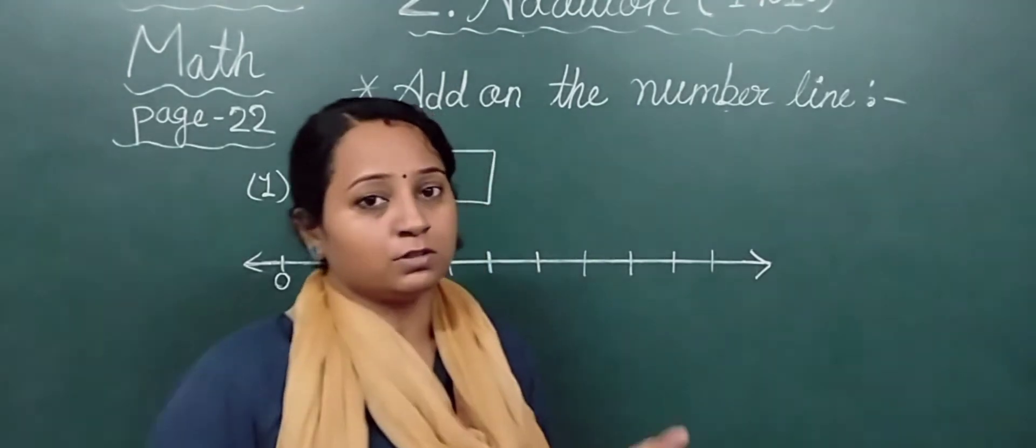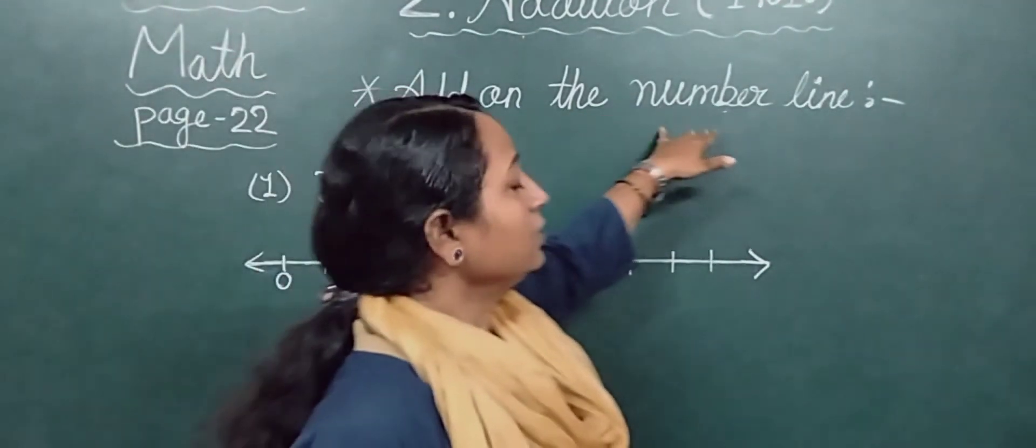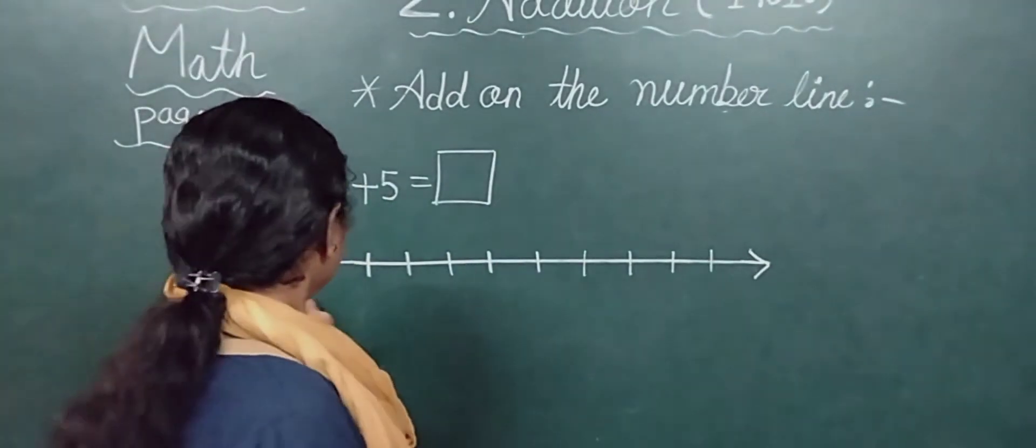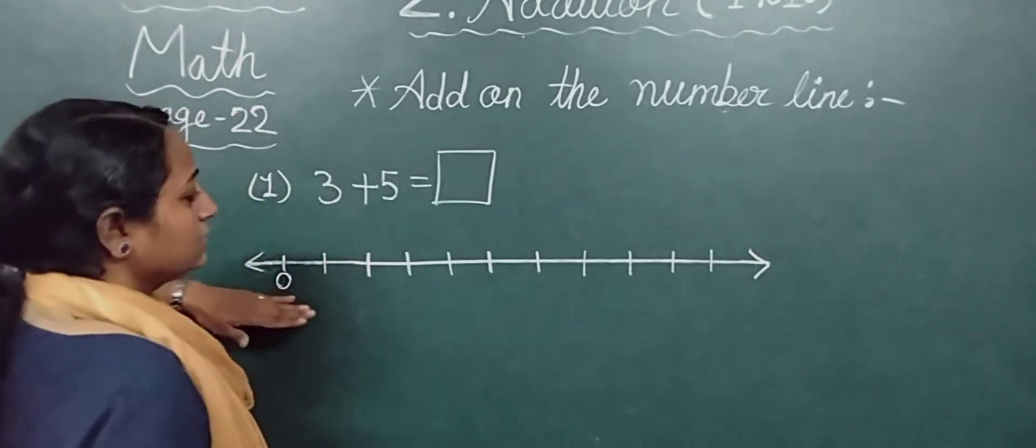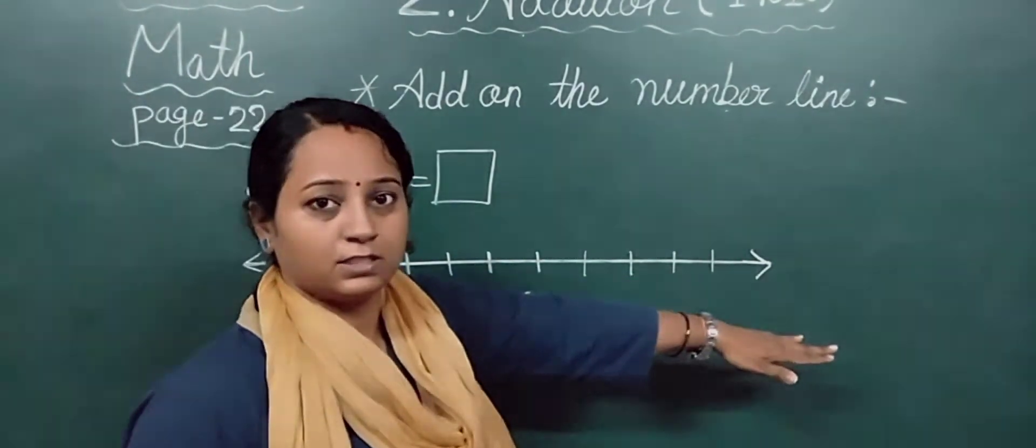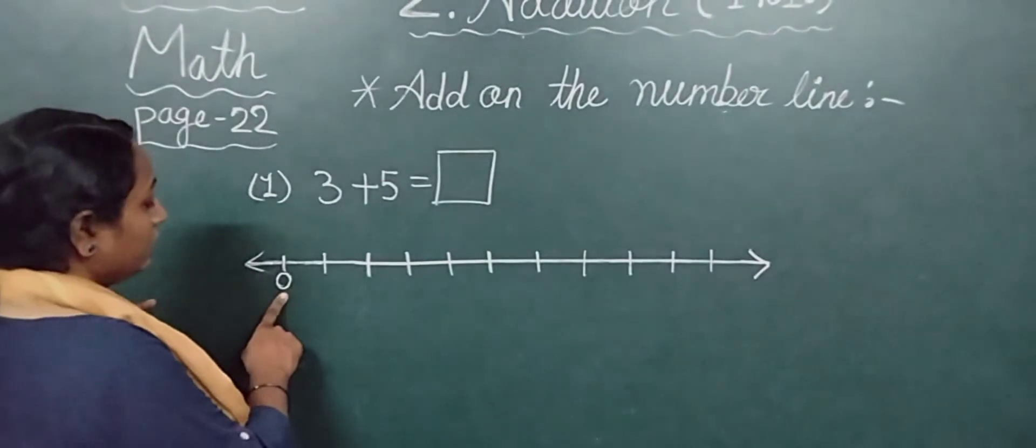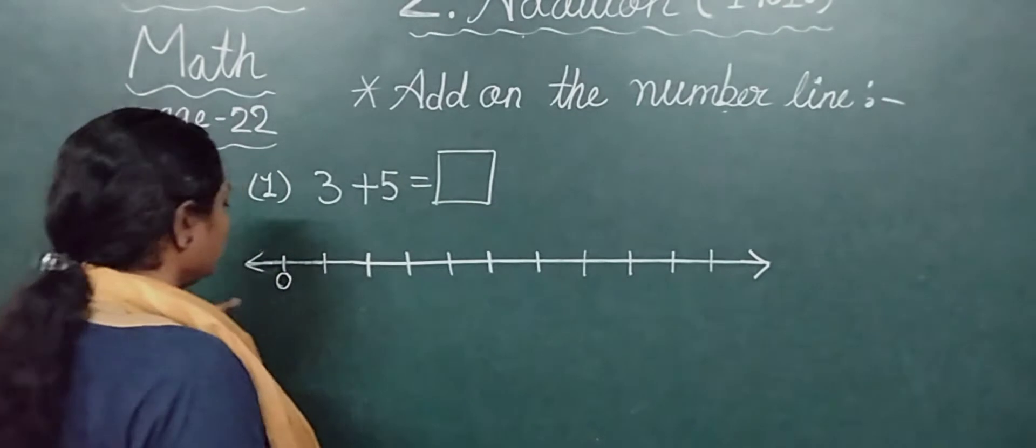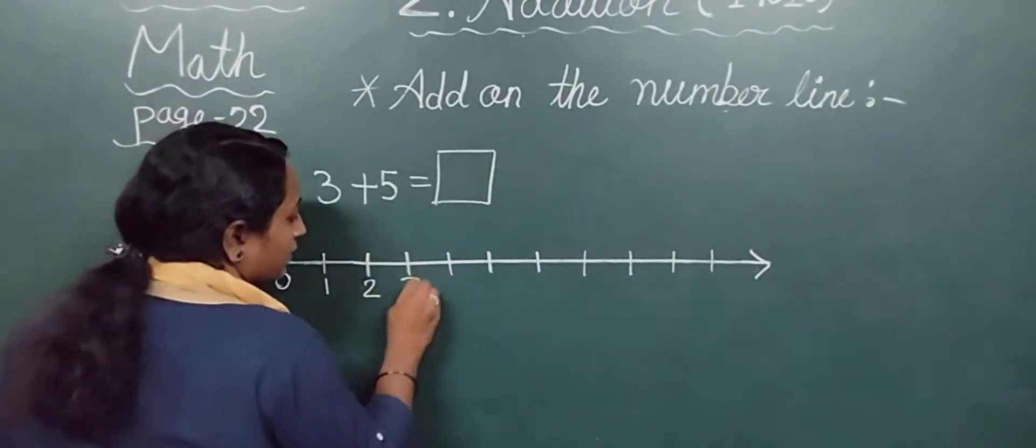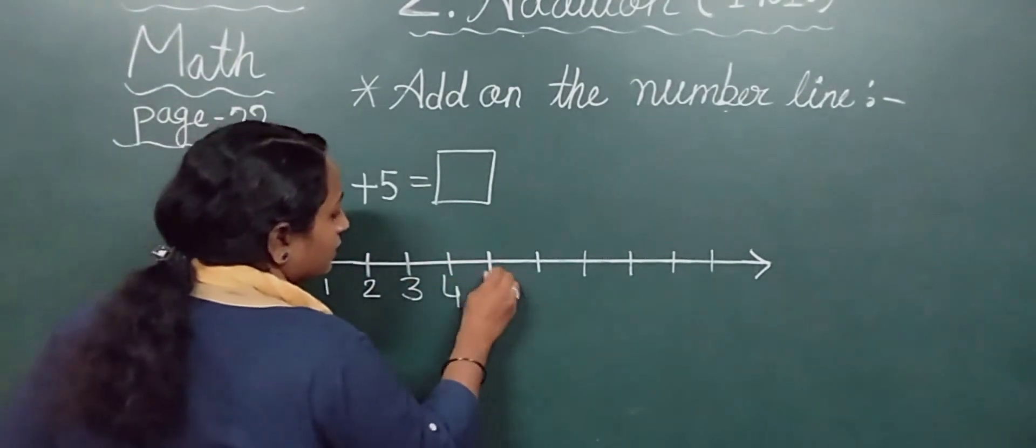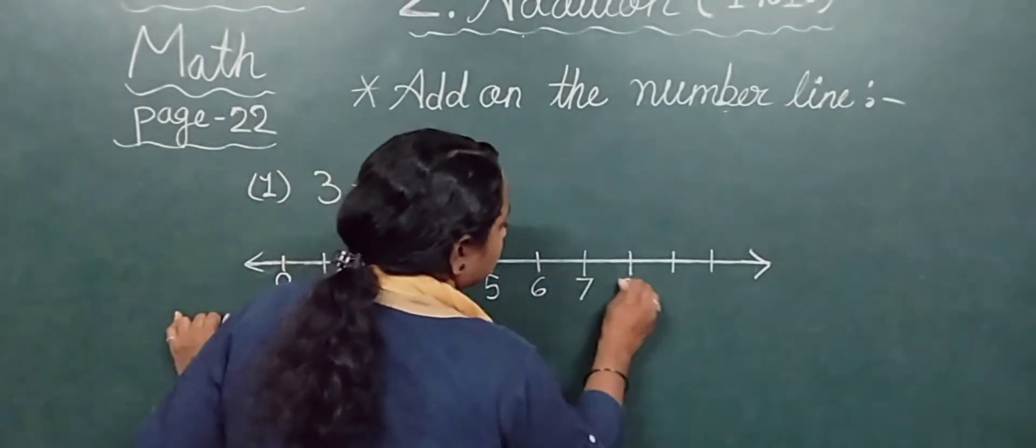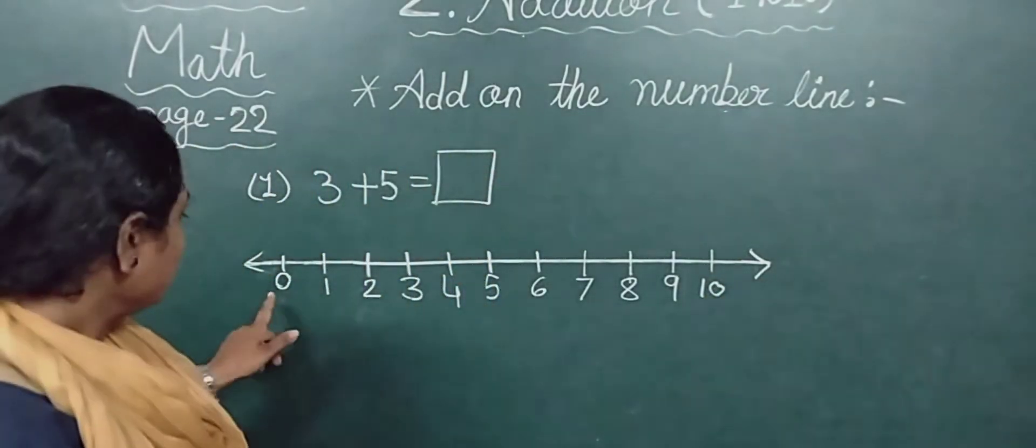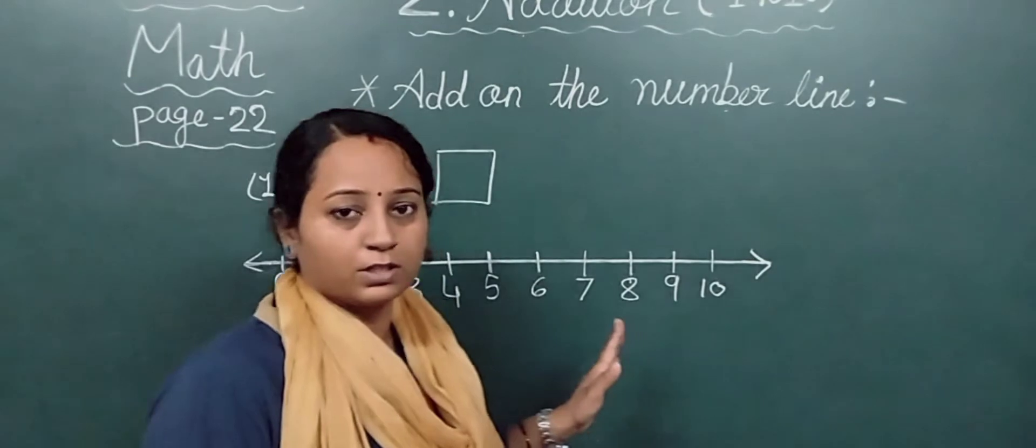Now students, we will do another exercise. Add on the number line. Now we have to add on the number line. I have made a number line here. This is called a number line. Now I will write numbers. Start from zero. Always start from zero. Number line always starts from zero: 0, 1, 2, 3, 4, 5, 6, 7, 8, 9, 10. I have written numbers from zero to ten.